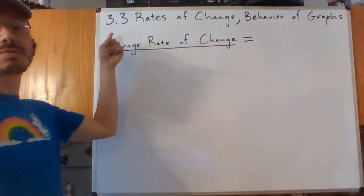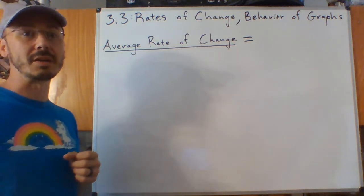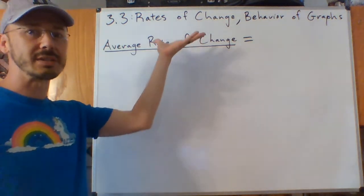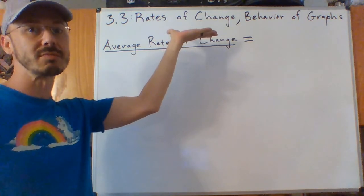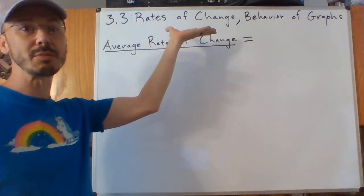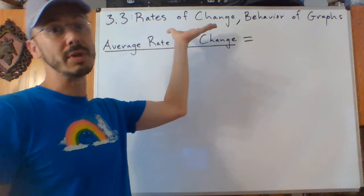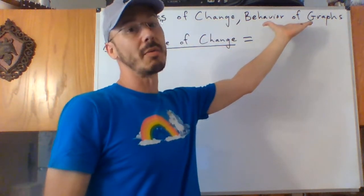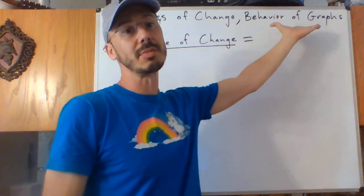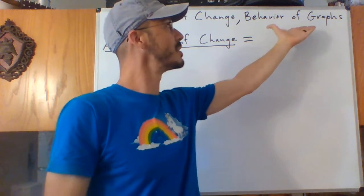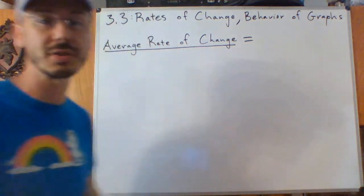Next, we're going to look at, in section 3.3, two related topics. The first is rates of change, which we've kind of seen before — we call it slope — but here we're also going to look at behaviors of graphs, and get some terminology for describing what the graph of a function looks like.